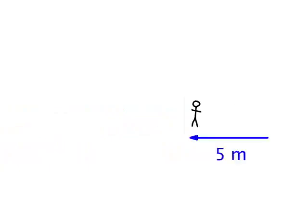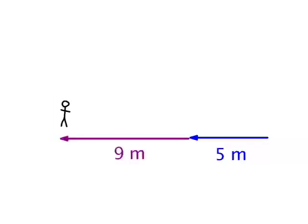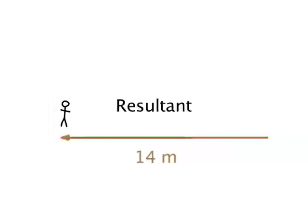Here a man walks five meters to the left, represented by the blue vector. He then walks an additional nine meters to the left, which is represented by the purple vector. We can add vectors to find the resultant. In this case the resultant is 14 meters to the left. This is the resultant displacement.